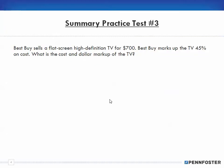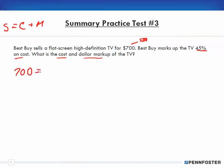Problem number three: Best Buy sells a flat-screen high-definition television for $700 — that's our selling price. Best Buy marks up the TV 45% on the cost. What is the cost and dollar markup of the TV? Selling price equals cost plus markup. We have $700 as the selling price, and we want to find the cost. The markup is 45% of the cost.